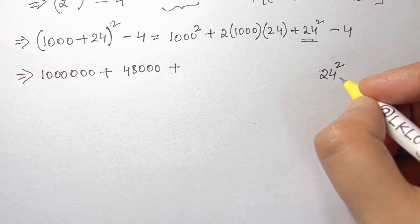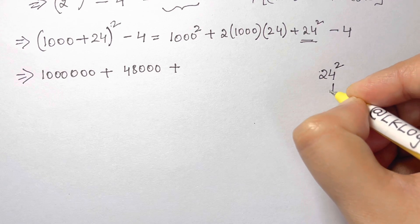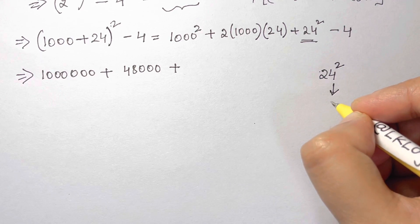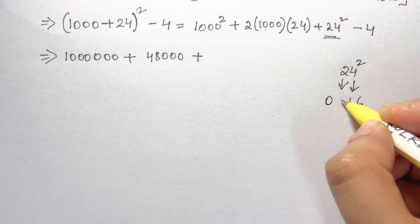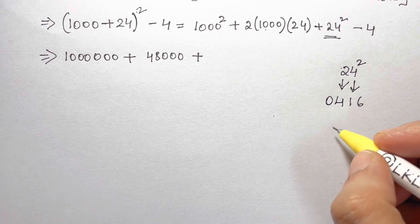That will give us 4 times 4 is 16. Then take the square of 2, that is 4, but write it as a double digit, that is 04.